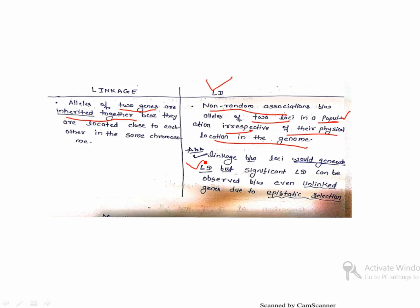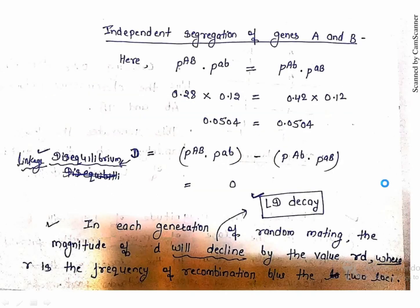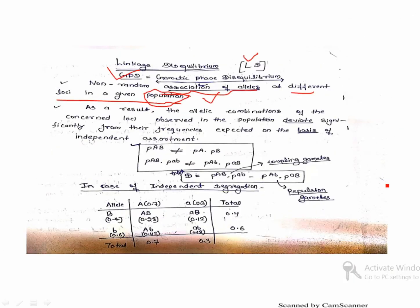Linkage between loci would generate LD, but significant LD can also be observed between unlinked genes due to epistatic selection. So LD can be observed between unlinked genes that are not physically linked but are inherited together due to epistatic selection. That's why this term is more broadly defined than simple linkage.